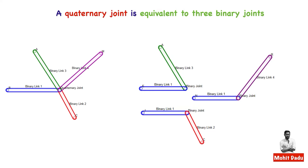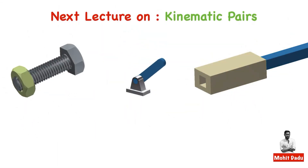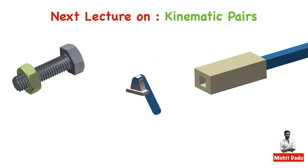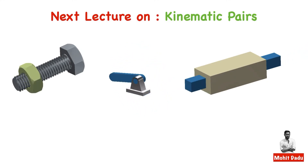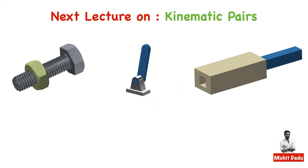So far we have had an introduction to the subject, studied the basic building block — the link — then the types of links, and joints with their classification. That's all for this introductory lecture. In the next lecture we will have a class on kinematic pairs, as shown on the screen. Thanks.